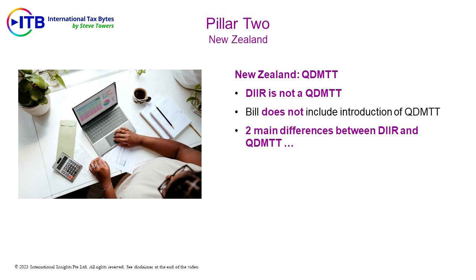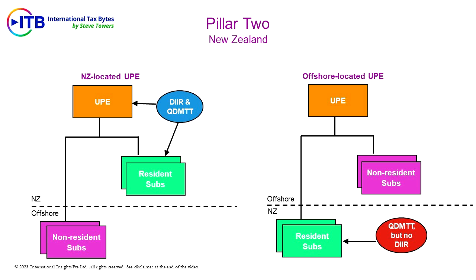There are two main differences between the DIIR and a QDMTT. Firstly, the DIIR will apply only to MNE groups which have a New Zealand-located UPE. This is shown in the diagram on the left. In contrast, a QDMTT would apply to all MNE groups, regardless of where the UPE is located.